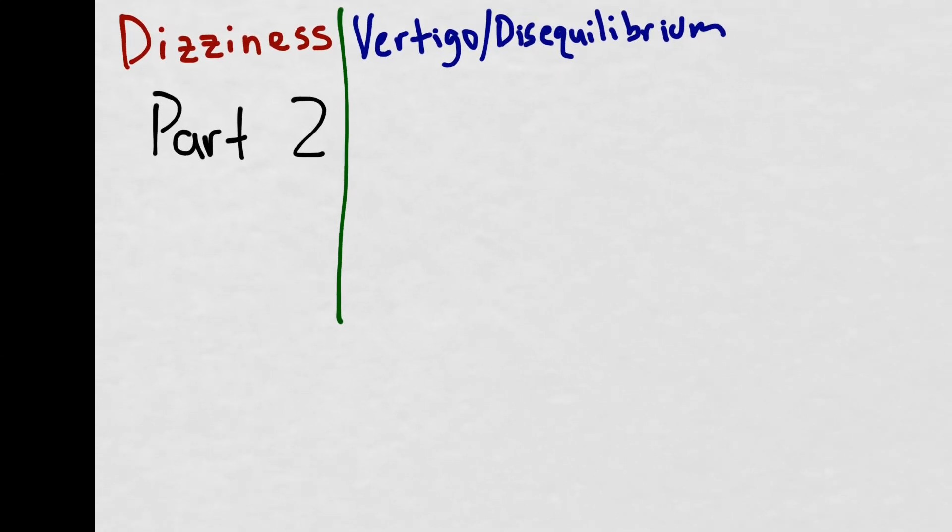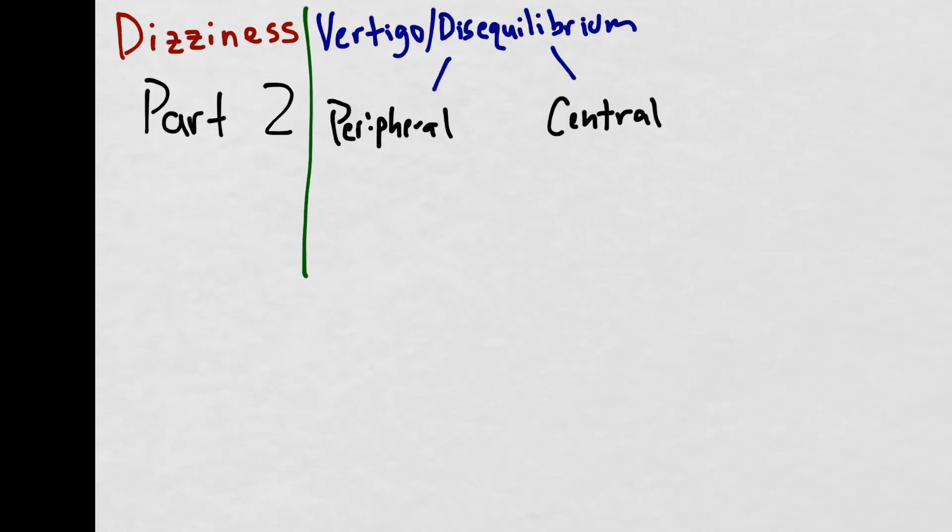In this lecture we'll focus on the approach to vertigo disequilibrium. The first branch point in the algorithm is determining if this vertigo disequilibrium is peripheral or central in origin. A peripheral issue is something going on with the vestibular system. It's an otologic problem and it has nothing to do with what's going on inside the brain. Whereas the central issue refers to an issue with the brain, either a stroke in the cerebellum or a posterior circulation stroke. Both of these can cause the sensation of vertigo or disequilibrium but they do so in a very radically different way.